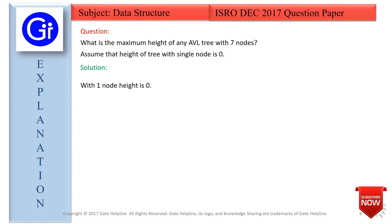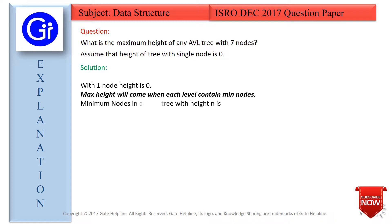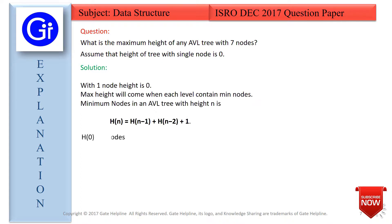We are given in the question that with one node the height of an AVL tree is 0. We know that the maximum height will come when each level contains the minimum number of nodes. For this we can use the formula: H(N) = H(N-1) + H(N-2) + 1, which gives the minimum nodes at height N.